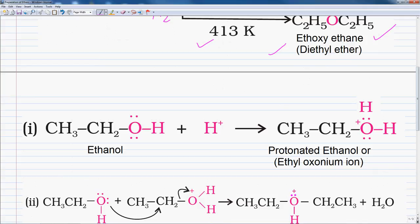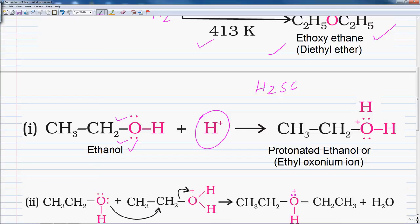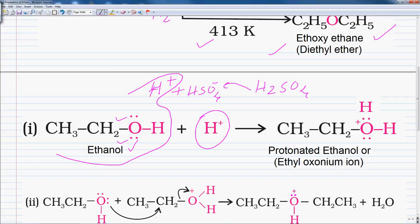As you can see, the oxygen of ethanol contains two lone pairs of electrons, so alcohol accepts a proton. This proton is released from H2SO4. H2SO4 dissociates into H+ and HSO4−. This H+ is accepted by the ethanol.